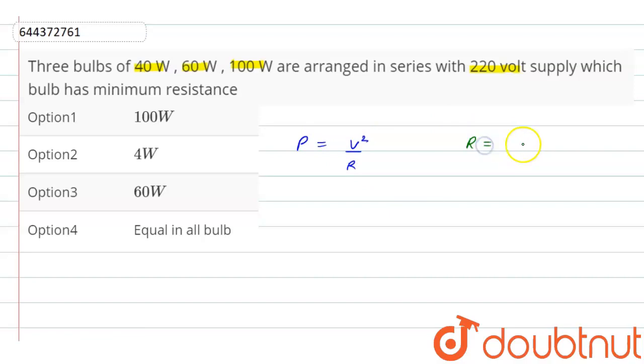resistance is equals to V² by P. So R1 is equals to 220 into 220 divided by 40, then it will be equals to 1210 ohm.